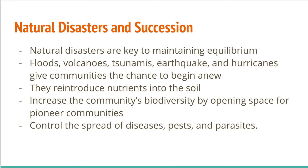Natural disasters also help to increase community biodiversity by opening up spaces. In Canada particularly, we have many species of plants that reproduce based off forest fires. An excellent example is Douglas fir, which will only open its seeds after a forest fire — the cones stay locked in until the fire takes place. This gives an opportunity for new offspring to grow as well as new species to move into an area, refresh diversity, control the spread of diseases, pests, and parasites, and make the entire ecosystem more resilient to massive catastrophic events.